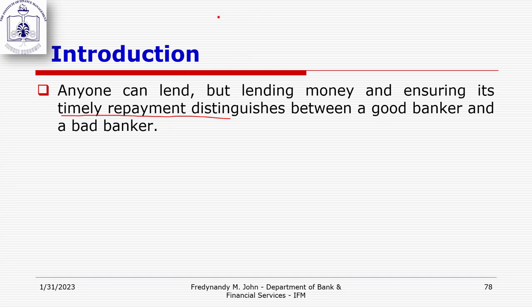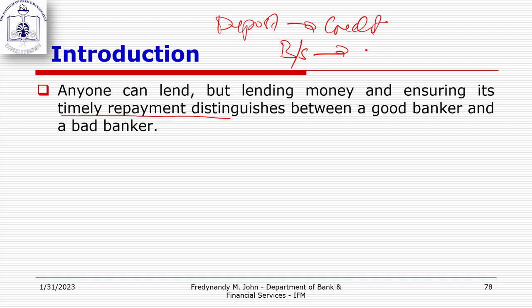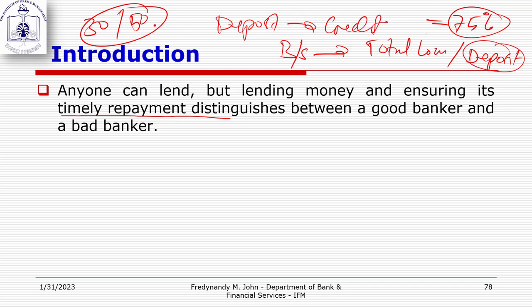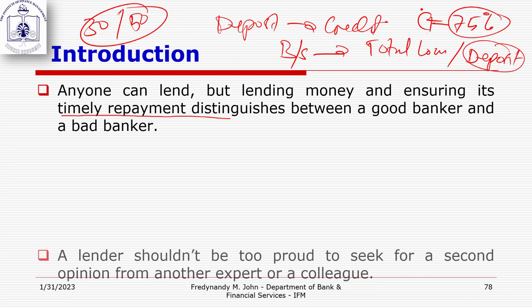Remember, we are using deposits to offer credits. Examining the balance sheet, there is an important ratio: total loans to deposits. One bank had this ratio at 75%, meaning 75% of total deposits are committed to loans. If 30–50% of depositors came to withdraw at once, the bank would face serious problems, though banking has means to manage this liquidity risk.